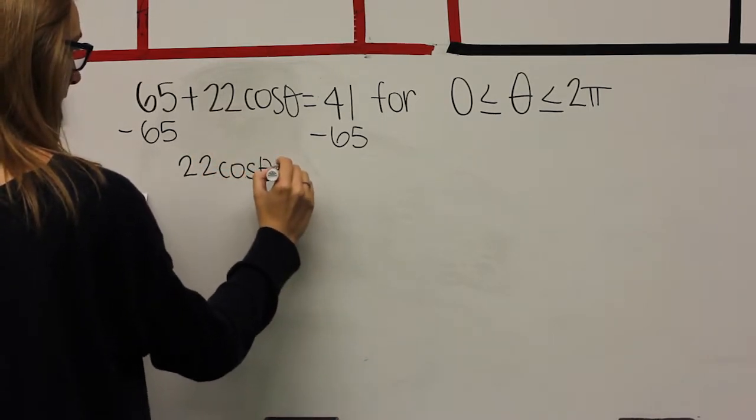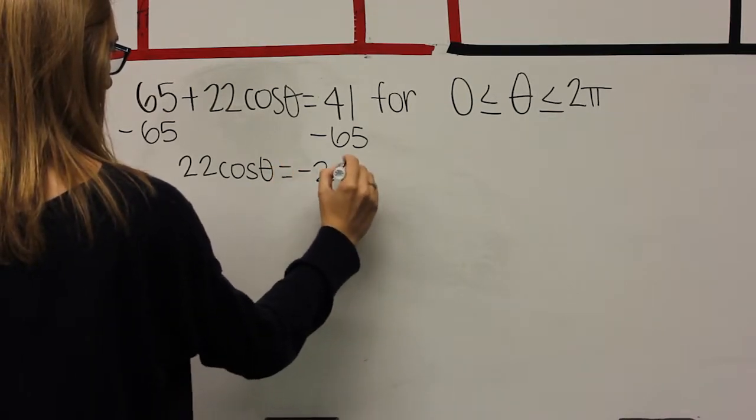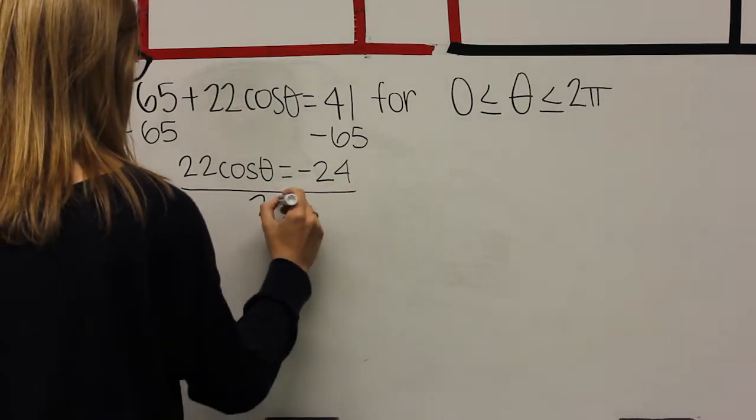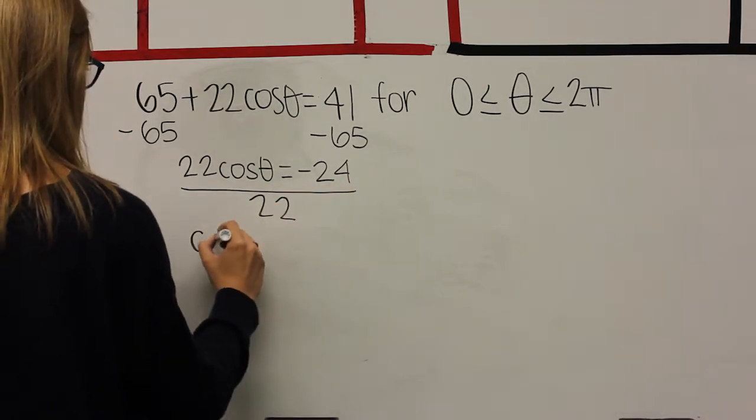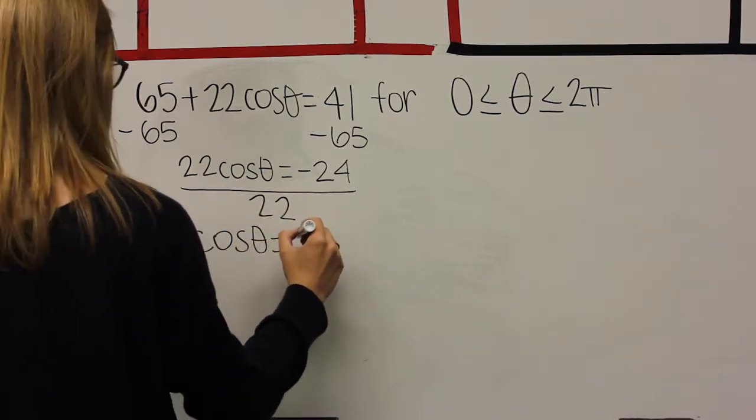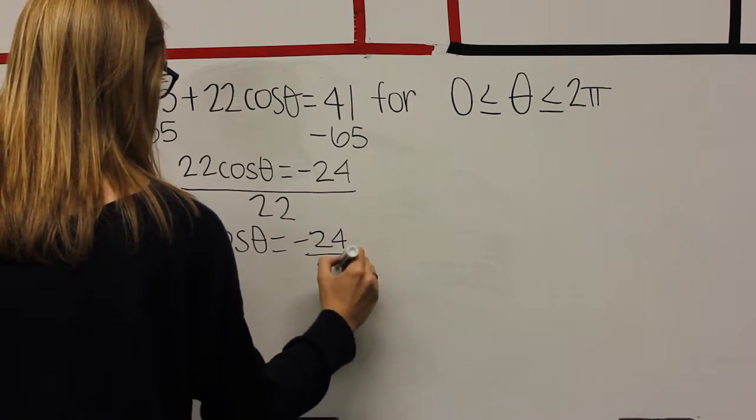Problem E. Treat cosine as x and isolate it on one side of the equation. Subtract 65 from 41 and then divide it by 22. Cosine equals negative 24 divided by 22. But this is not possible because cosine has to be between negative 1 and positive 1.